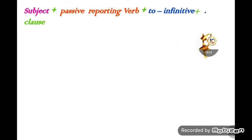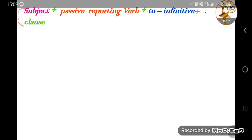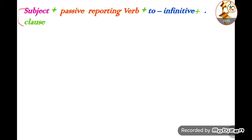Please write down all these notes and examples in your notebook. Now we'll move to the personal form, which is also reporting verbs with passive — but we call it 'personal'. We called the previous one 'impersonal' because we used 'it' and didn't focus on a specific person.